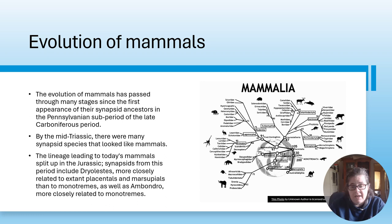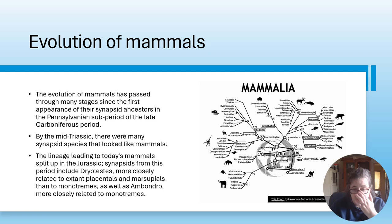The evolution of mammals has passed through many stages since the first appearance of their synapsid ancestors in the Pennsylvanian sub-period of the late Carboniferous. By the mid-Triassic, there were many synapsid species that looked like mammals. Synapsids from this period include the Dryolestida, more closely related to extant placentals and marsupials than to monotremes, like the platypus, as well as Ambondro, more closely related to monotremes.